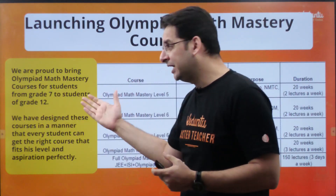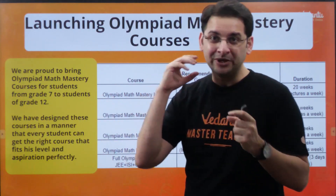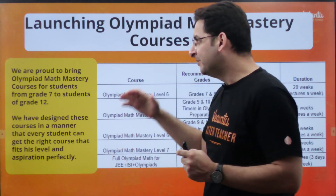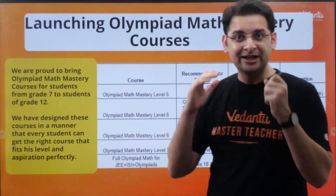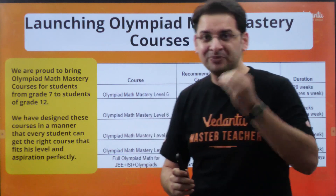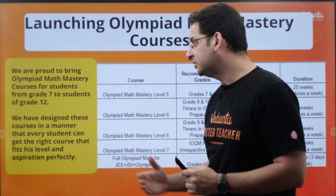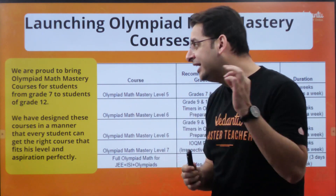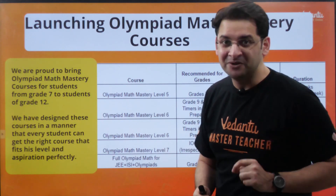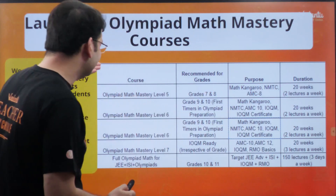We are proud to introduce a structure of mathematics Olympiad courses right from grade 7 to grade 12. We will soon also be entering into grades 4th, 5th, and 6th. The courses designed so far are for students who are currently in class 7th up till class 12th. We have designed these courses so that every student gets the right course that fits their level and aspiration perfectly.